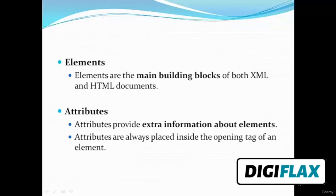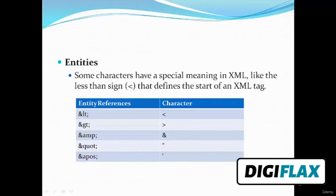From a DTD point of view, all XML documents are made up of the following building blocks: elements, attributes, entities, PCDATA, and CDATA. Elements are the main building blocks of XML and HTML documents. Attributes provide extra information about elements and are always placed inside the opening tag. Entities — some characters have special meaning in XML, like the less-than sign that starts an XML tag, so we use entity references such as &lt; for less-than.